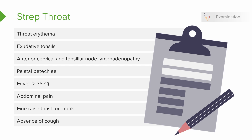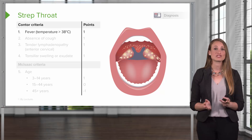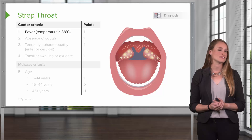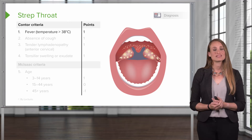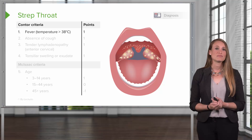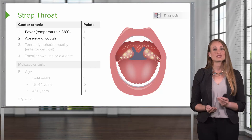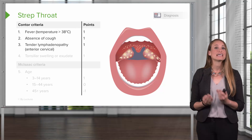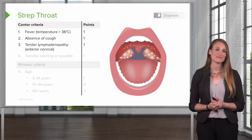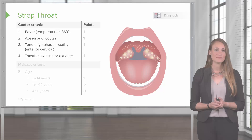Remember, a patient with strep throat typically does not have a cough — if they have a cough, it's usually a viral illness. When a patient presents with a sore throat, the clinician needs to decide whether to test for strep using the diagnostic scoring criteria called the Centor criteria or MacIsaac criteria. Points are scored based on symptoms: one point each for fever, absence of cough, tender lymphadenopathy in tonsillar or anterior cervical chains, and tonsillar swelling or exudate — for a maximum of four points. This is the Centor criteria.